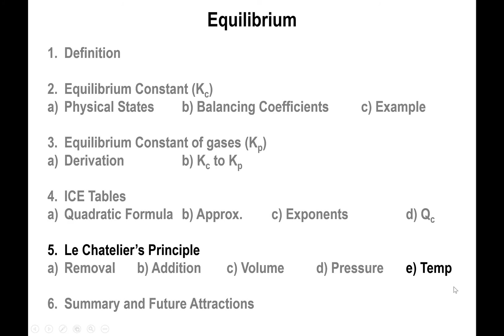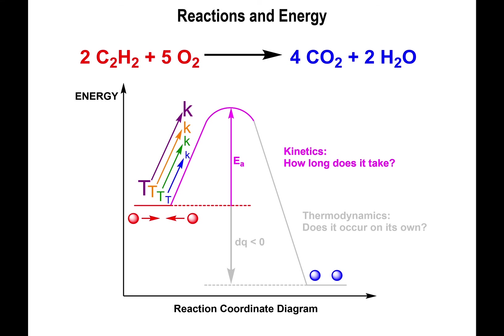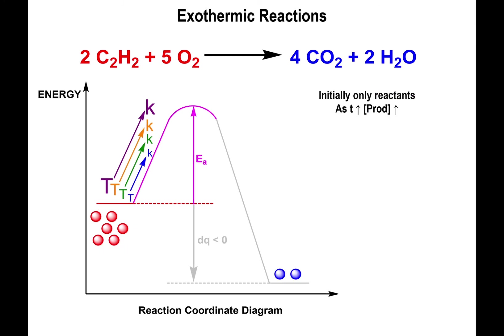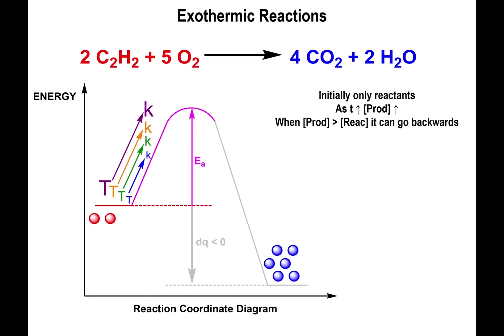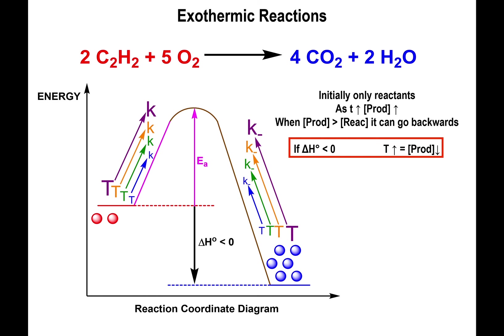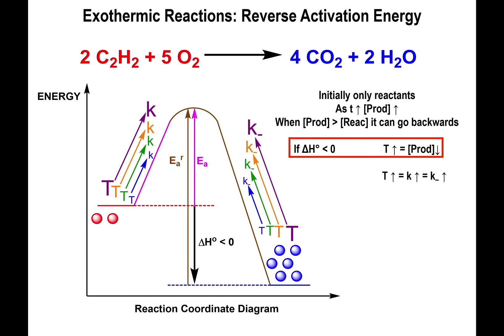The last factor is temperature. We touched on this during kinetics. Temperature affects equilibrium because it determines how much the reaction can proceed forward versus backward. Increasing the temperature will increase the forward reaction, but will also increase the rate at which products convert back to reactants. For an endothermic reaction, increasing temperature makes it easier for products to return to the reactant side, ultimately decreasing the equilibrium concentration of products.